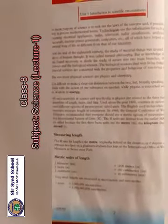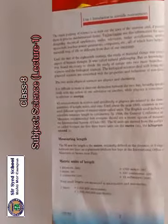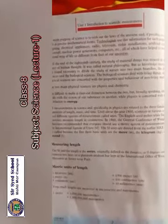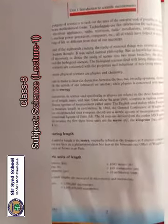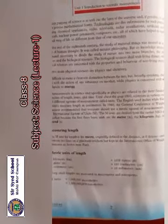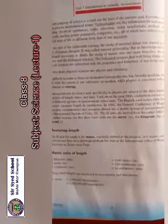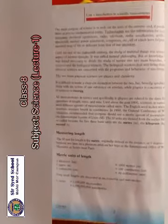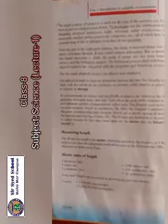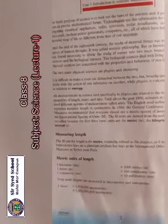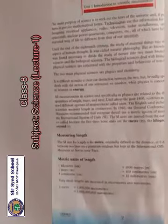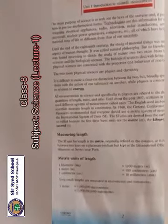First, we have measuring length. The unit of length is the meter, defined as the distance at zero degrees centigrade between two lines on a platinum-iridium bar kept at the International Office of Weights and Measures. One kilometer equals 1000 meters, one meter equals 100 centimeters, one centimeter equals 10 millimeters. Very small lengths are measured in micrometers and nanometers: 1 meter equals 1 million micrometers and 1 billion nanometers.